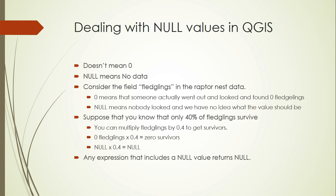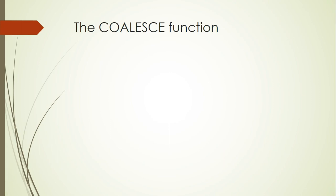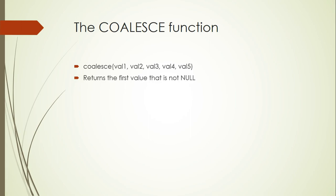In QGIS, in the expression editor, we have something called the coalesce function. The way that works is you pass the coalesce function a set of values — it can be any number from one on up. I've never actually used this with more than two values, but it is possible to have more than two. What the coalesce function does is it returns the first value that is not null. So if value one is null, it returns value two. But if value two is also null, then it returns value three, and it just keeps going down the line until it finds something that's not null.